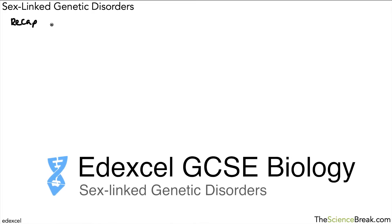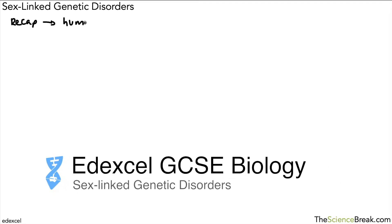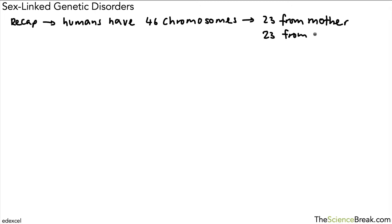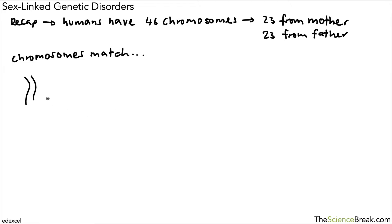Today we're going to take a look at sex-linked genetic disorders, but let's do a quick recap. Humans have 46 chromosomes in their body cells — 23 come from the mother and 23 come from the father. We can match these up into 23 pairs, so one set might look like this, another like this, and so on.